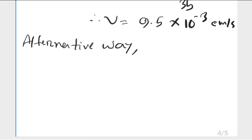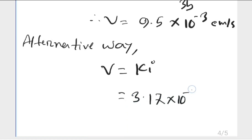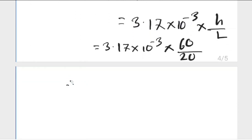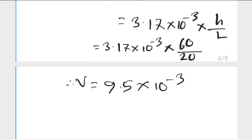We can verify: discharge velocity equals k times i, where k is hydraulic conductivity and i is hydraulic gradient. So k equals 3.17 into 10 inverse 3, and i equals h over L, where h equals 60 and L equals 20. This confirms discharge velocity equals 9.5 into 10 inverse 3 centimeter per second.